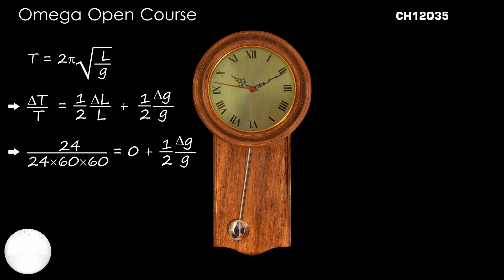Since the clock loses 24 seconds in 24 hours, ΔT/T = 24/(24×60×60). The length of the pendulum does not change, therefore ΔL/L = 0.